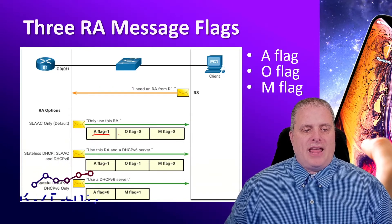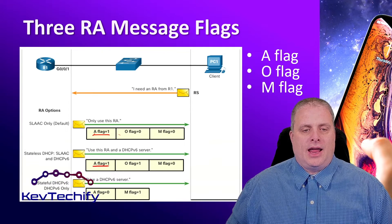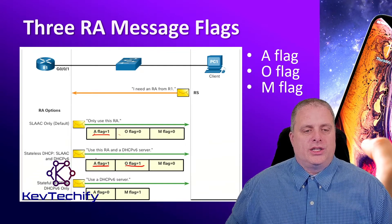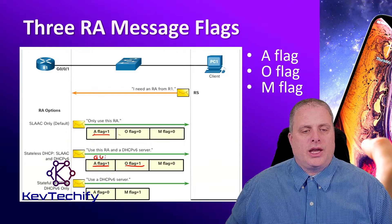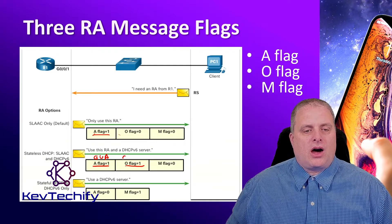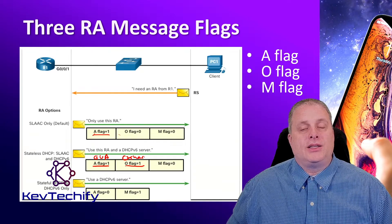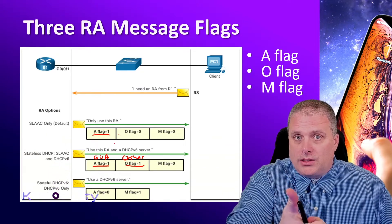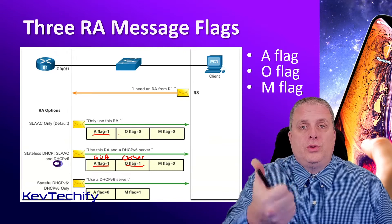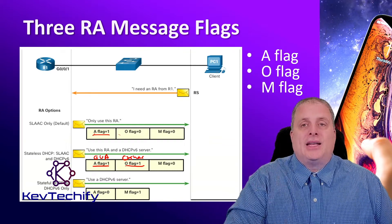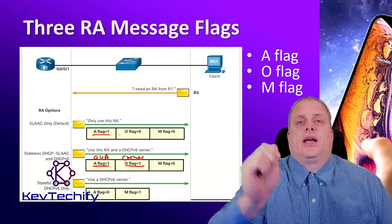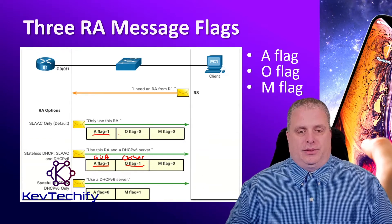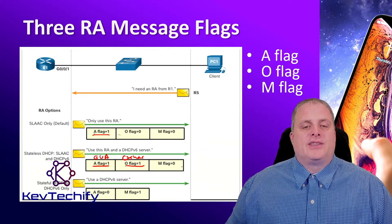Another combination is the A flag is set and the O flag is set. We're going to generate our own global unicast address, but then there's other information available on a DHCPv6 server. So generate your own IPv6 global unicast address and also contact the DHCPv6 server to get some additional information. The M flag is not set.